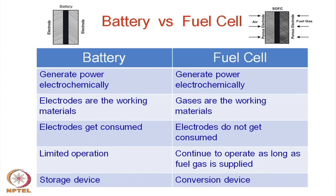Both battery and fuel cell generate power electrochemically. In a battery, the electrodes are the working materials — the electrode itself is the source of energy. In a fuel cell, the reactants are gases and cannot serve as current collectors, so additional materials are needed to act as electrical contacts. The electrode contacts in a fuel cell do not get consumed; it is the reactants — the fuel and oxidant — that are consumed continuously.